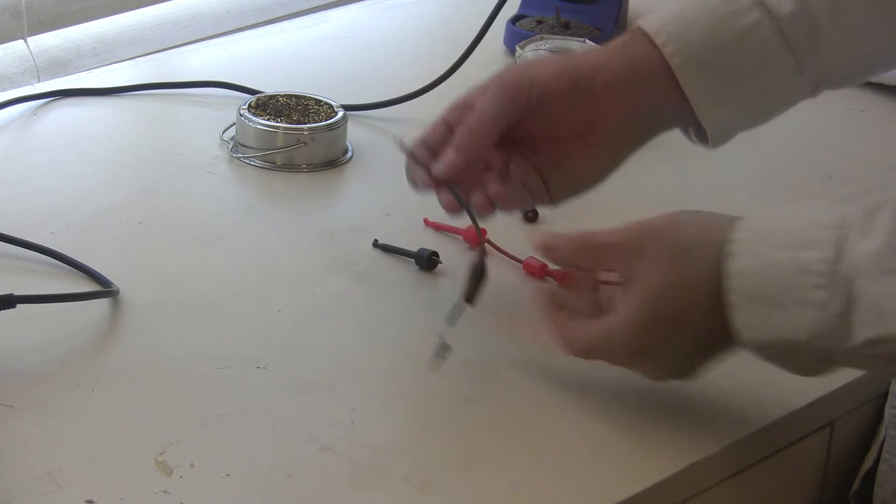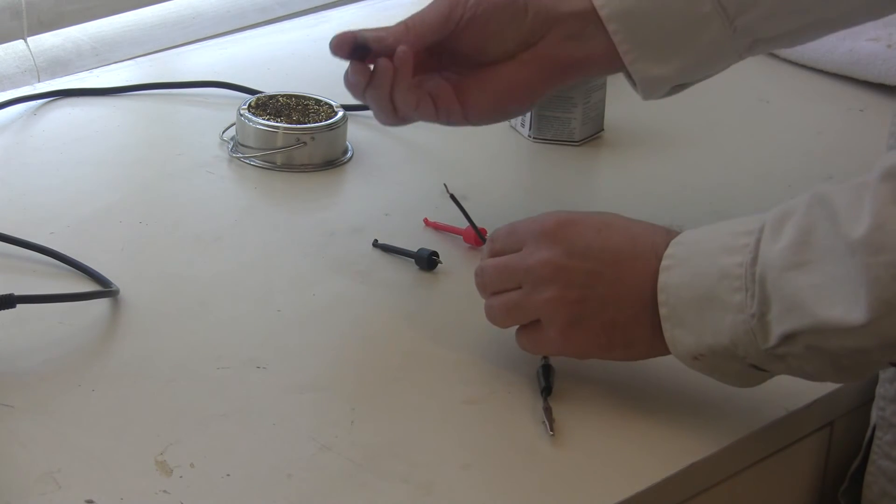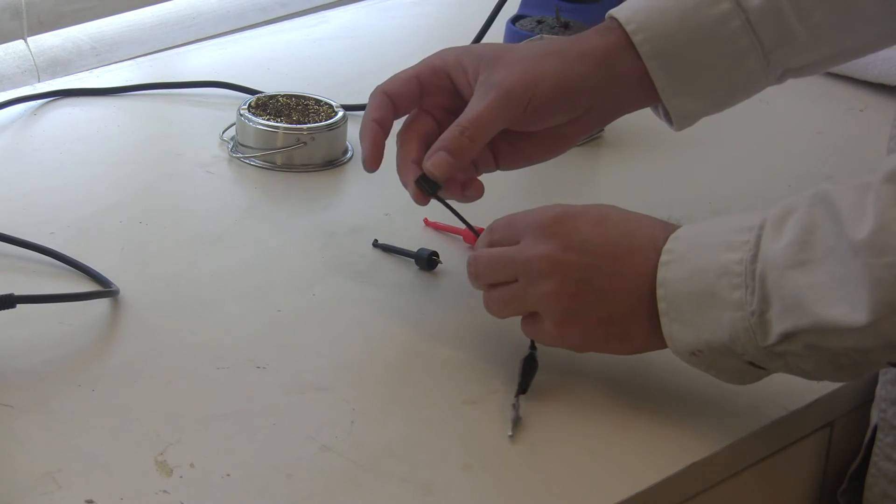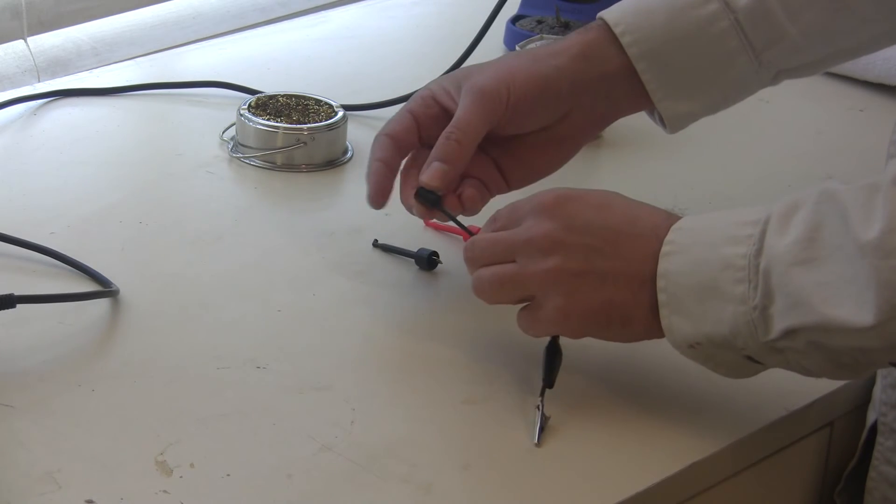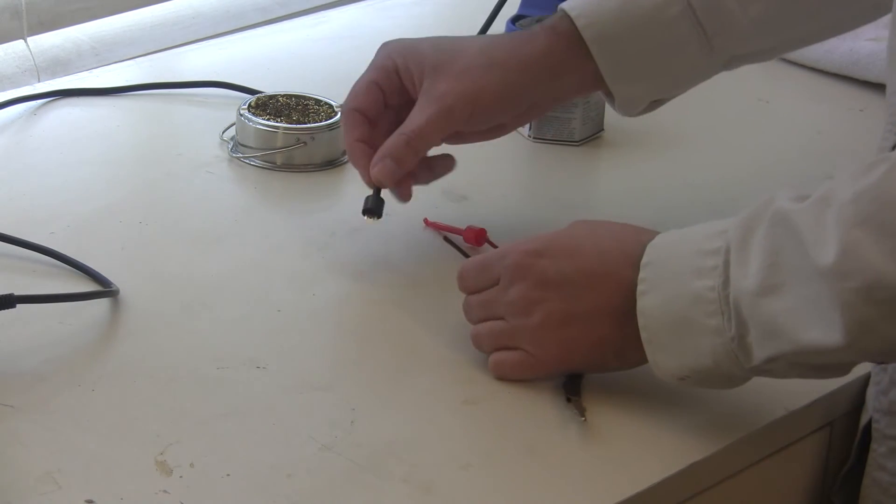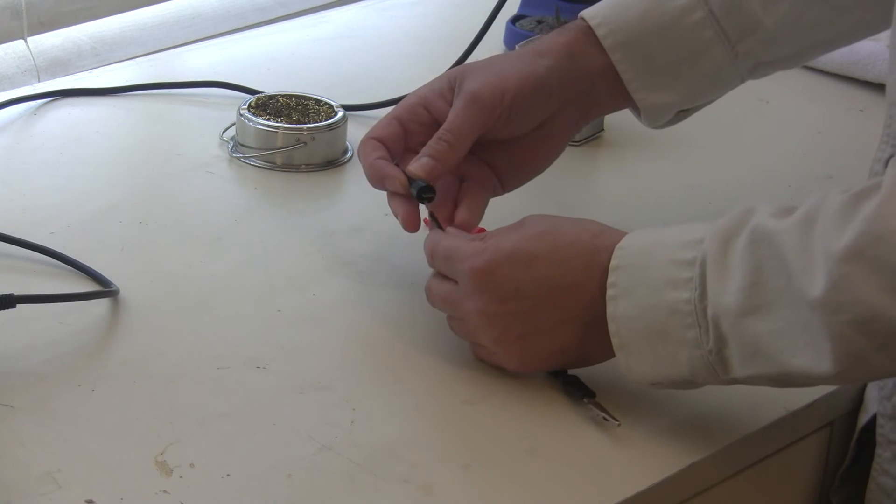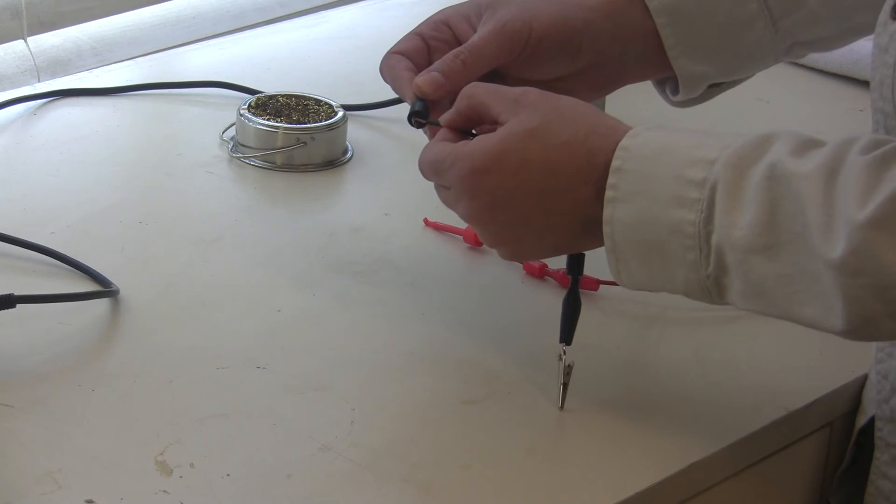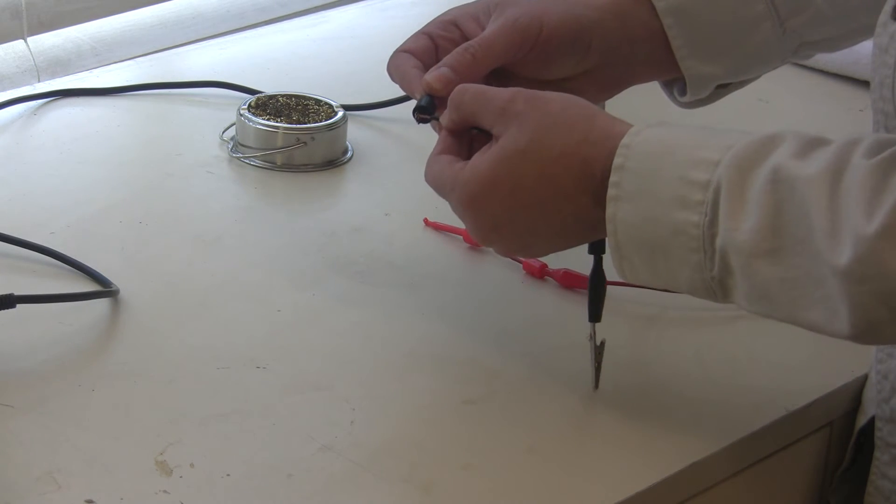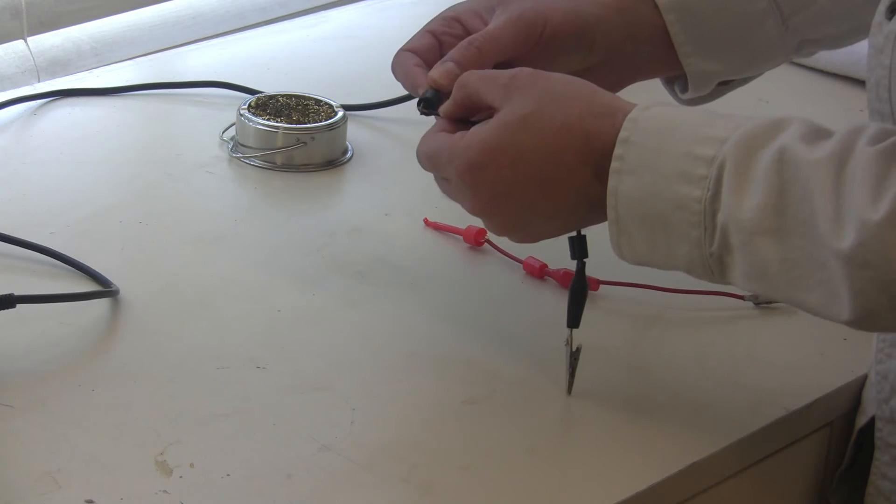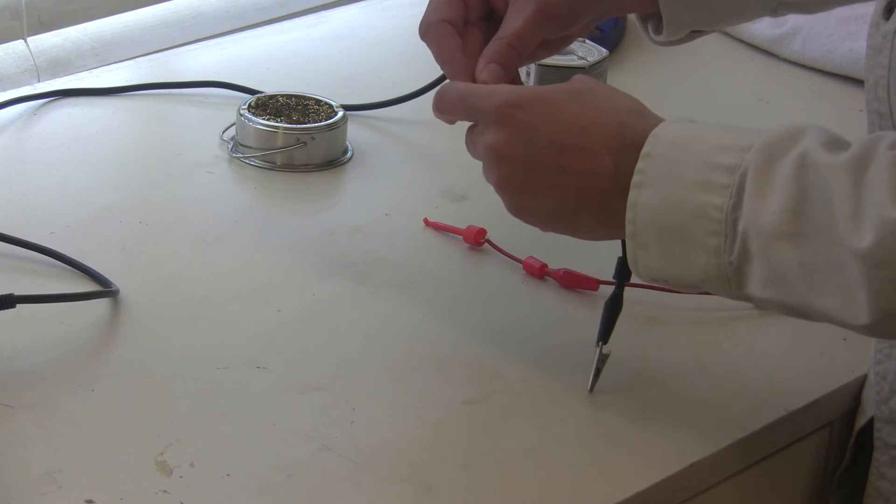So we put those through the holes and then take the mini grabber and there's a little hole there. Just stick the wire through the hole and kind of just bend it over so it's in place.